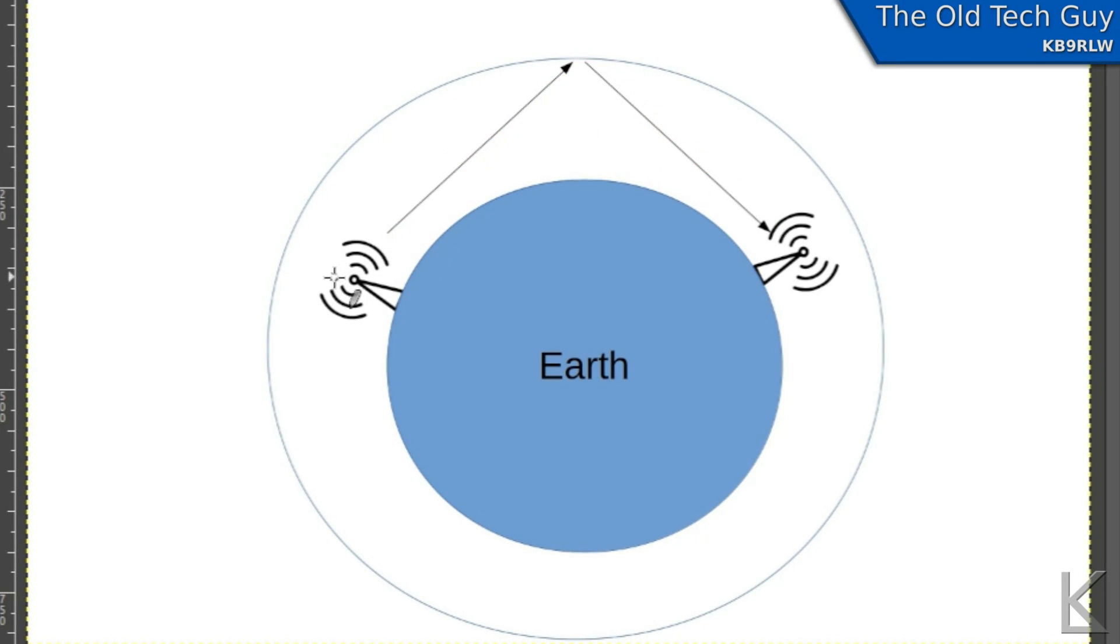That's a direct path, okay? And in reality, depending upon the angle, there might be multiple bounces. It'll bounce off the earth, bounce back off the ionosphere, bounce off the earth, bounce off the ionosphere, get down there eventually. It just depends on how high up in the ionosphere the signal's bouncing, how the radiated signal's coming off the antenna. There's all kinds of variables.